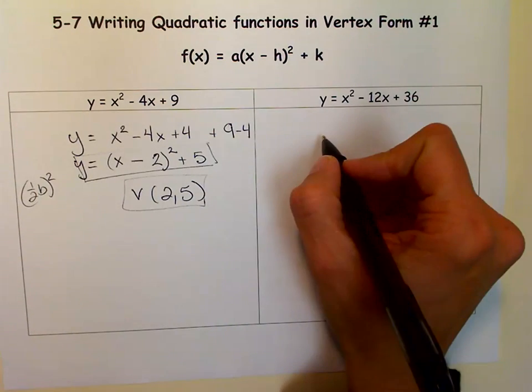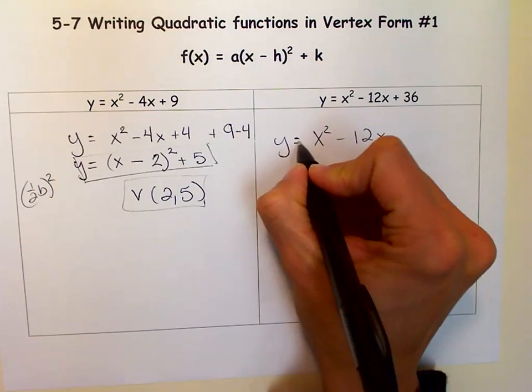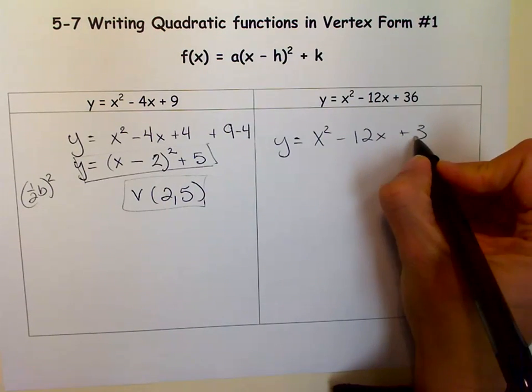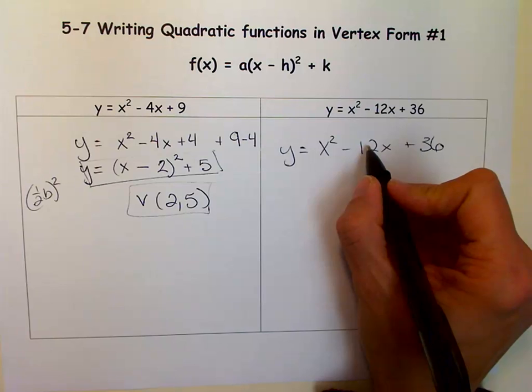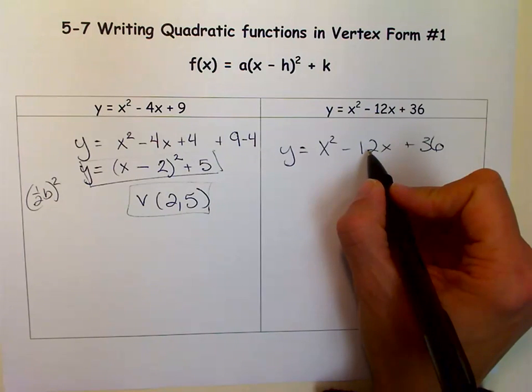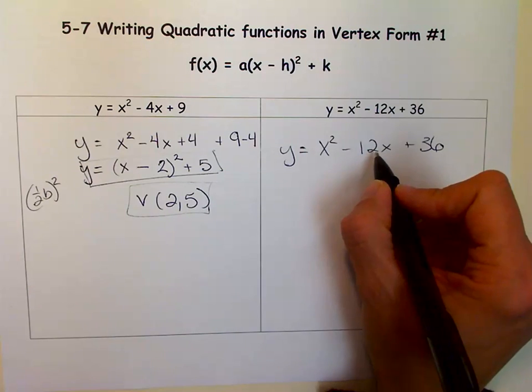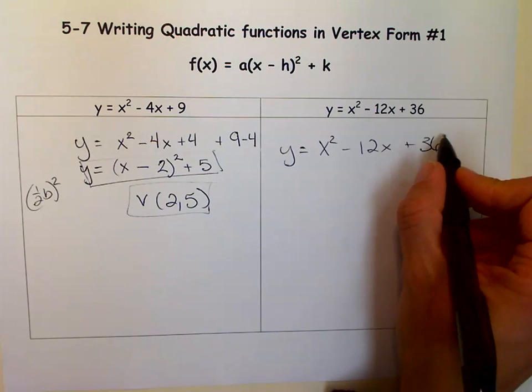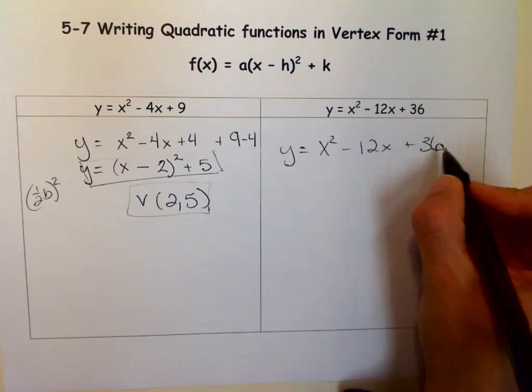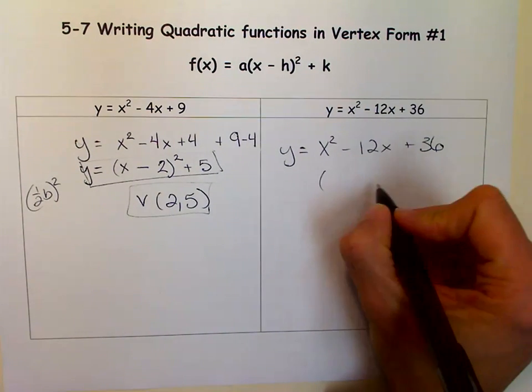Let's try this one. x squared minus 12x plus 36. So what we're going to do is we're going to take half of this, which is 6, and we're going to square it. Well, it's negative 6, but when you square it, the negative goes away. And it's 36. Well, notice we already have a 36 there. So if we already have a 36 there, we don't need to add 36 and subtract 36, because we're just going to get 36. So we're ready to factor.